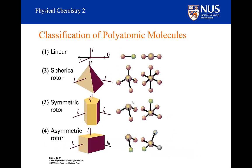We can use symmetry to classify polyatomic molecules with regard to their moments of inertia. For a linear molecule — which can be a diatomic, triatomic, or any number of atoms — one of the moments of inertia is always equal to zero. There is no rotational axis around the internuclear axis. The other two rotational axes, perpendicular to the internuclear axis, have identical moments of inertia regardless of the angle between them. So I sub A is equal to zero, and I sub B and I sub C are equal to one another.